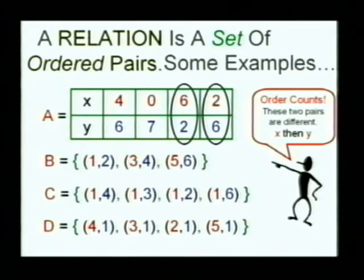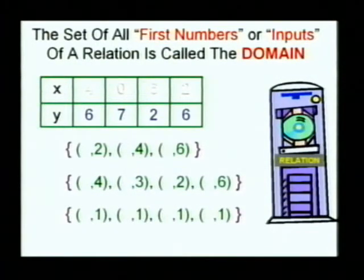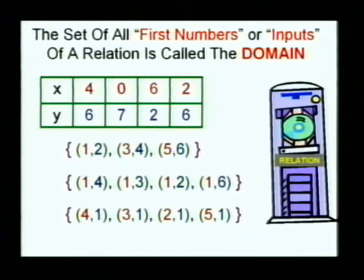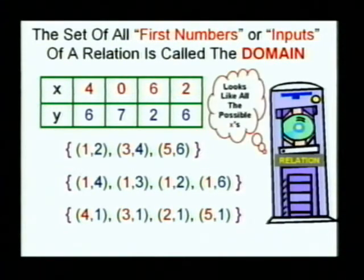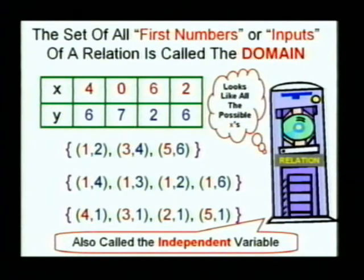We had some other vocabulary. The set of all the first numbers of your pairs — you computer folks might want to call it the inputs — that set of all the first numbers is called the domain. For instance, in the first relation, the domain is 4, 0, 6, and 2, the x values. When we start to graph things, you're going to get to pick what these are, so we call this the independent variable, because you've got to independently pick it.